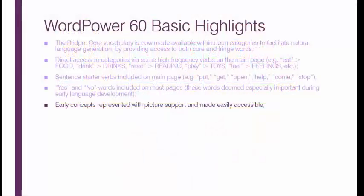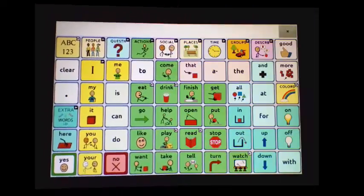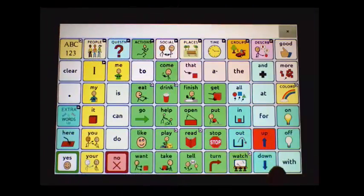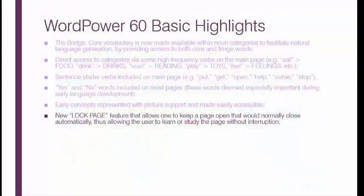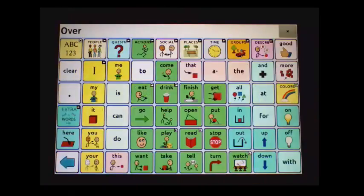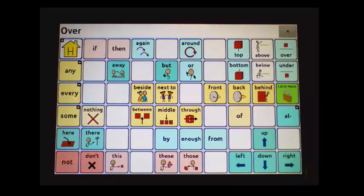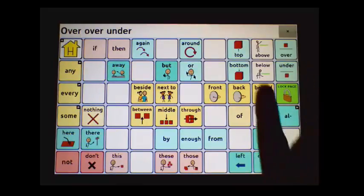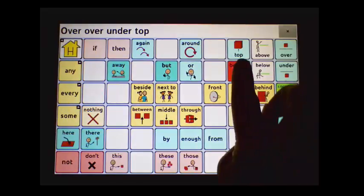Early concepts are represented with picture support and are easily accessible — for example, Up and Down. The lock page feature allows one to stay on a page that would normally close after a selection, enabling sequences like: Over, over. Under. Top. Bottom.